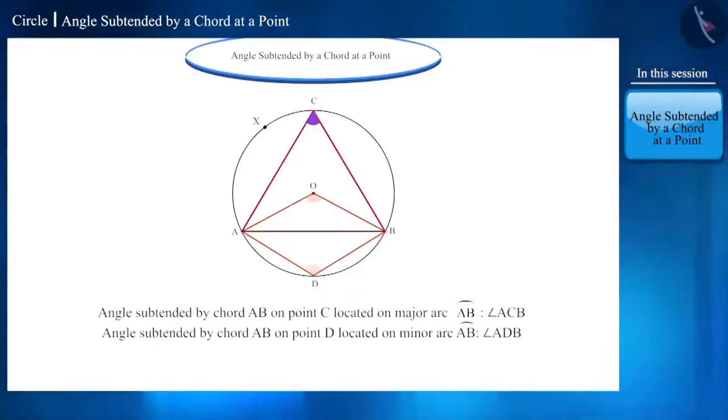Angle ACB and angle ADB are angles subtended by chord AB at points C and D located at major arc AB and minor arc AB respectively. And angle AOB is the angle subtended by chord AB at center O.